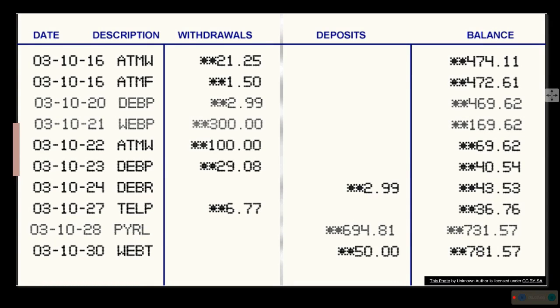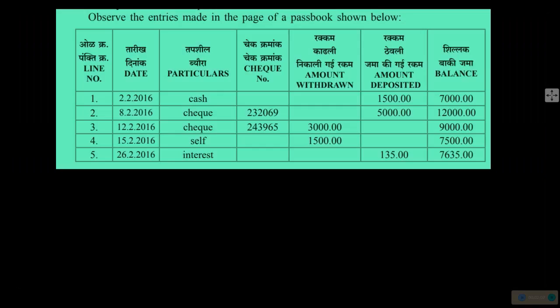This is the page of a passbook. You may not be that familiar with it because you don't have an account or you are not dealing with a passbook. A passbook page is given in your textbook also. These are the entries made in the passbook of a particular person. The passbook is of 2016, and there are line numbers — 1, 2, 3 — simply indicating the line number for reference.